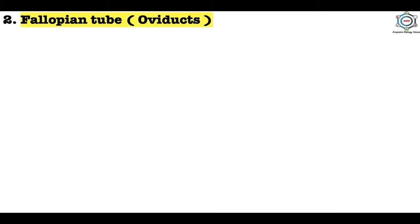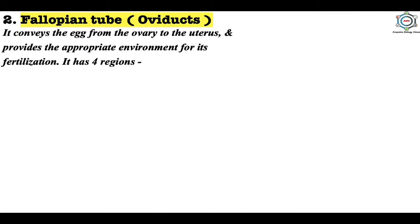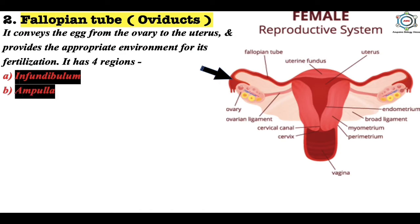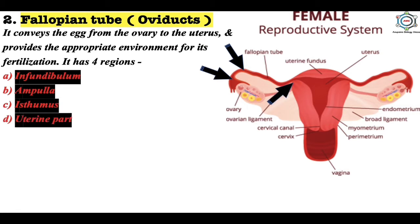The fallopian tube, or oviduct, conveys the egg from the ovary to the uterus and provides the appropriate environment for fertilization. It has four regions: first is the infundibulum, which has finger-like projections called fimbriae that receive the egg released from the ovary. Second is the ampulla, the next region after the infundibulum and the major part of the fallopian tube. Third is the isthmus, which follows the ampulla. Fourth is the uterine part, which communicates with the uterine cavity.